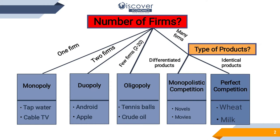Similarly, if ten people bring one kilogram of milk each, pour it into one big pot, and mix it up, they won't be able to identify which milk particle came from their buffalo. So perfect competition happens when you have homogeneous products which are similar to each other and you cannot identify which one is yours.